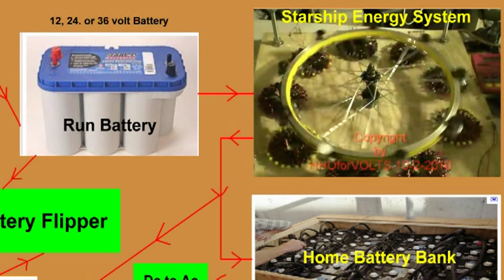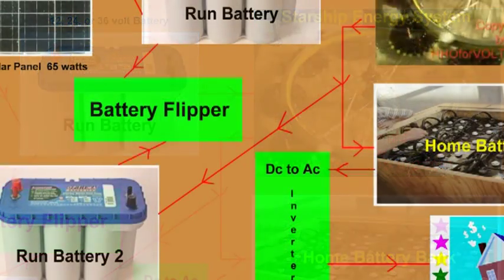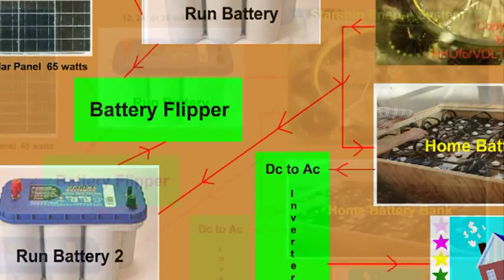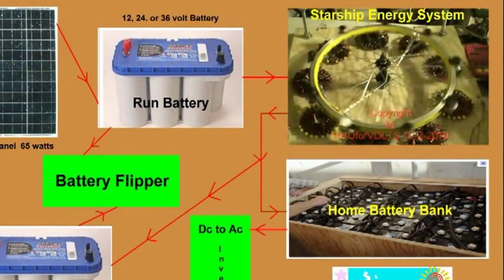Now the motor is running with a gear for power takeoff, so it supplies the electricity, the free electricity, back to the run battery 2 and to the battery home storage system. And that is kept charged.